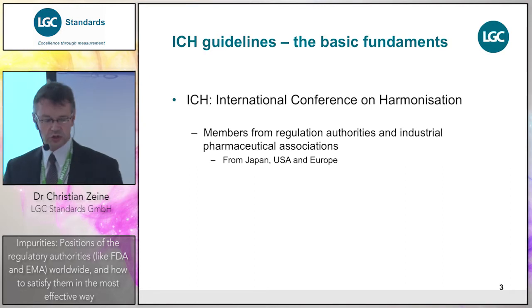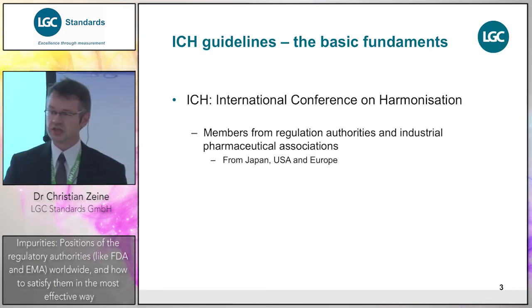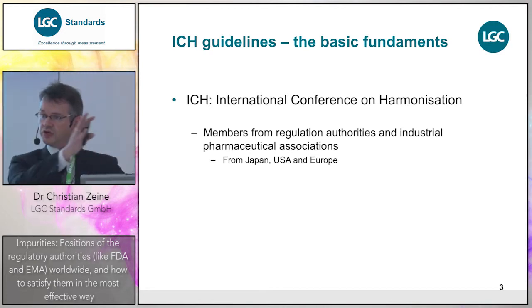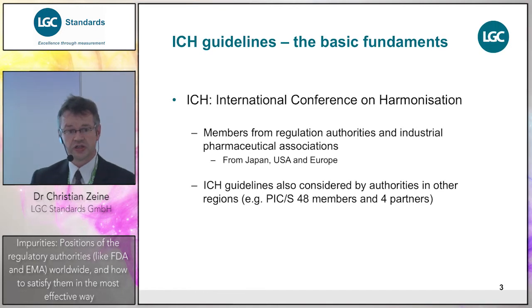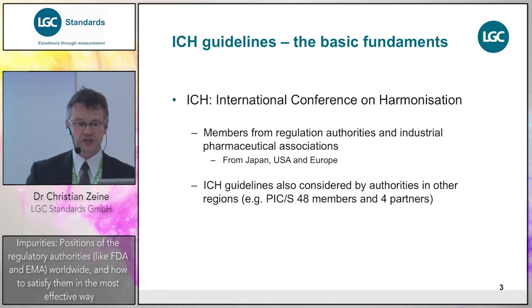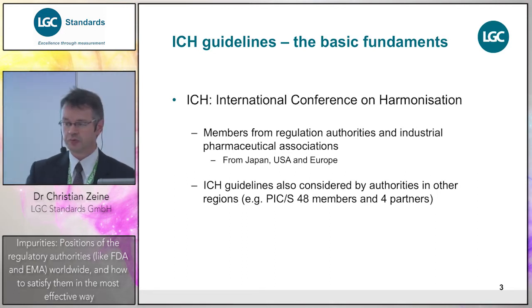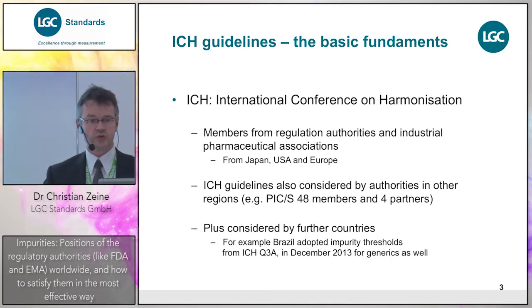ICH is the International Conference on Harmonization. Members from regulatory authorities sit together with members from industrial pharmaceutical associations from the three major markets: Japan, Europe, and the United States. The guidelines are not only considered in those markets — there is also the Pharmaceutical Inspection Convention and Cooperation Scheme with 48 member authorities from all over the world. For example, just at the beginning of this year, Brazil set up a regulation saying they will follow the ICH guidelines and thresholds.